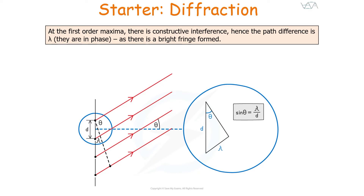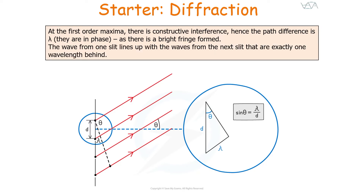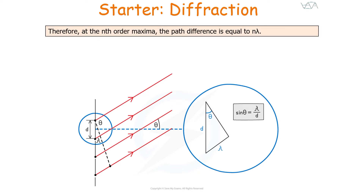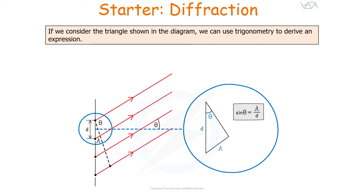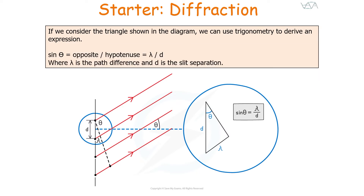At the first order, the path difference is lambda because the wave from one slit lines up with the wave from the next slit that is exactly one wavelength behind. At the nth order maxima, the path difference is equal to N lambda. Considering a triangle in the diagram, we use trigonometry: sin theta equals opposite over hypotenuse, where lambda is the opposite and D is the hypotenuse. D is the distance between the two slits, and lambda is the path difference, which also equals the wavelength.